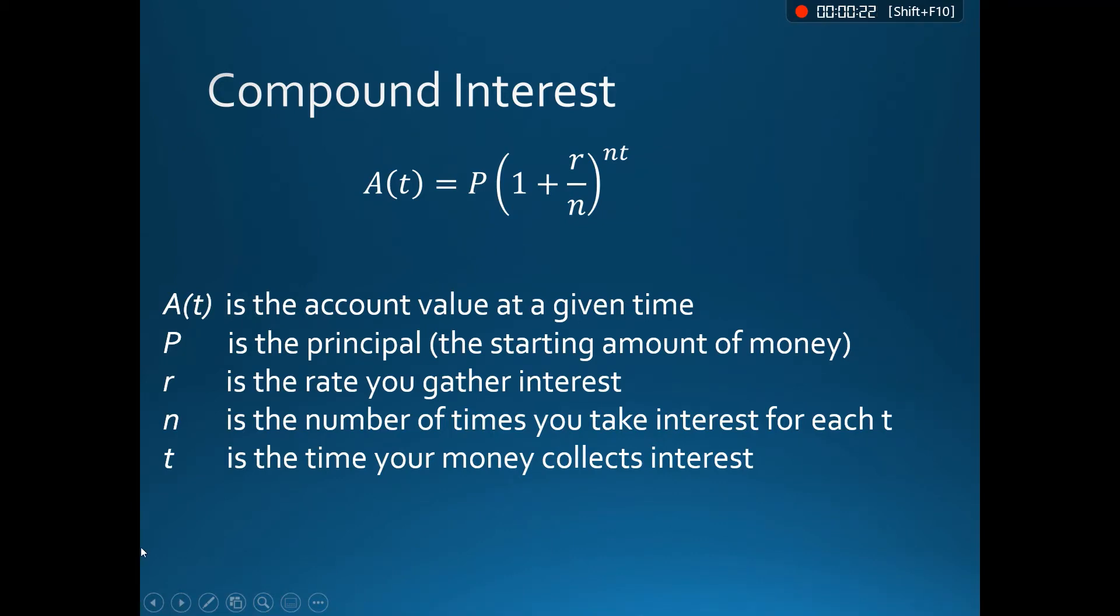So this is our formula from last time for compound interest. The thing I'm going to focus on is our R and our N today, so our rate that we're gathering interest and the number of times that we compound. And last time we saw if we increased N, then we would increase the amount of interest that we would get at the end of the year, right?